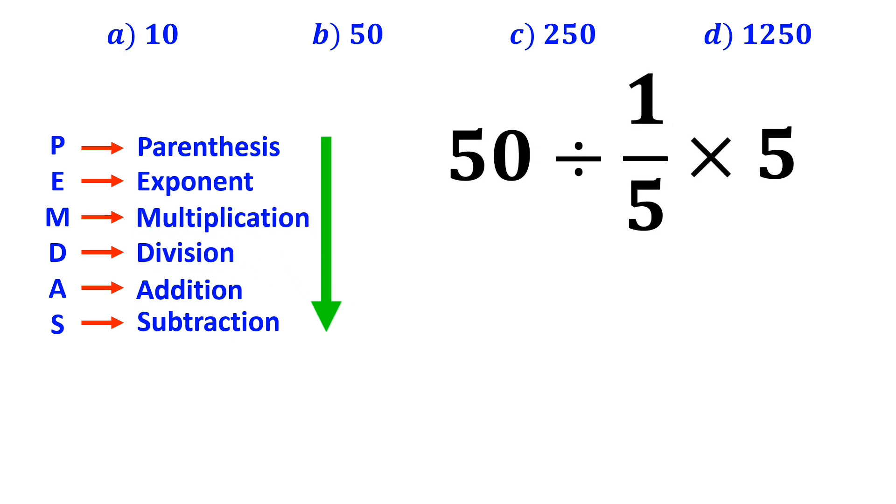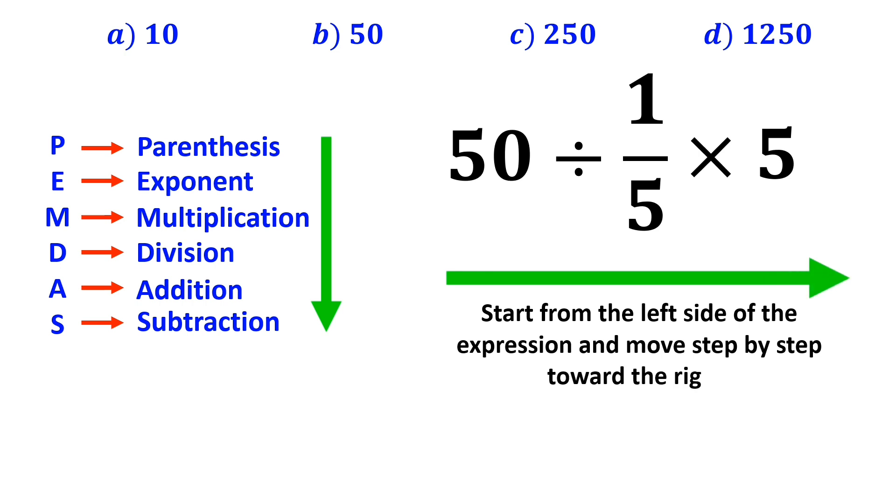In this case, the best thing to do is to start from the left side of the expression and move step by step toward the right. So, first we start with the expression 50 divided by 1 over 5.